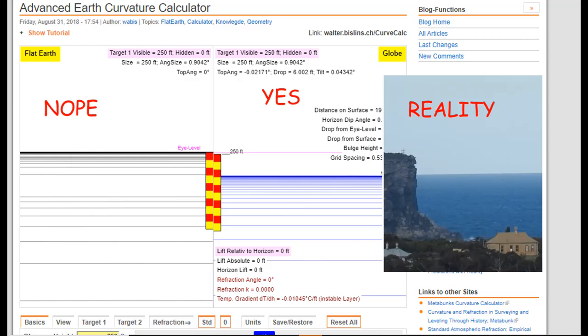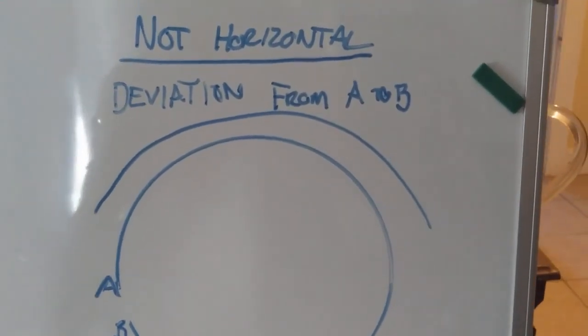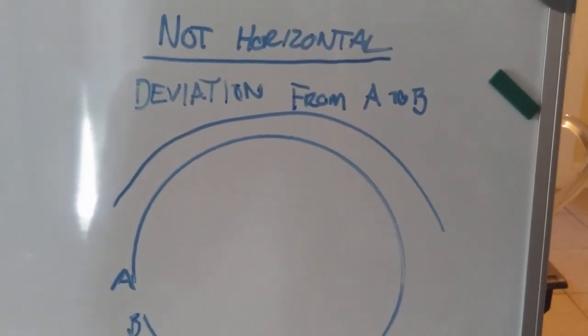All the rest of us smart people use Earth curve calculators like Walter Bislin, which can do FE mode, GE mode, or both. And it's really an eye-opener for anyone who really wants to see which model best matches reality. You kind of get in there and you can see yeah, that flat Earth just isn't doing it. It's getting pathetic guys, just throw in the towel.